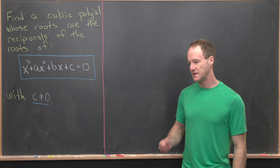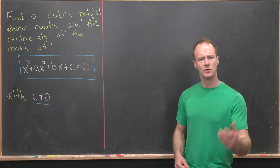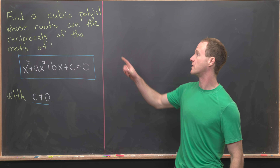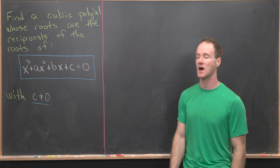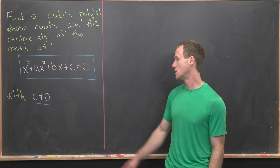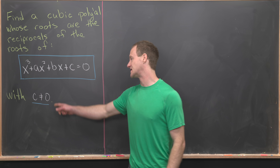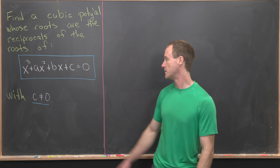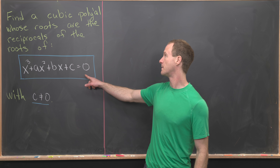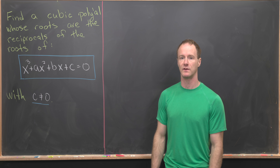We're going to look at a nice algebra problem that involves the roots of a cubic polynomial. We want to find a cubic polynomial whose roots are the reciprocals of the roots of x cubed plus ax squared plus bx plus c equals 0, where c is not equal to 0. We need c to not be equal to 0, because if c were equal to 0, then 0 would be a root, and we can't take the reciprocal of 0 to form a new cubic polynomial.